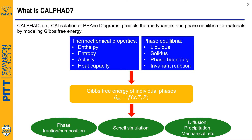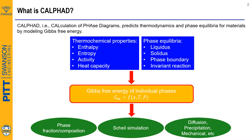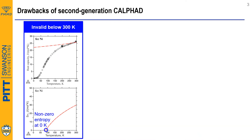The CALPHAD approach has been successfully used to design commercial steel, superalloys, aluminum alloys, and so on. The basis that controls the reliability of the CALPHAD method is a description of Gibbs free energy. So far, the widely used Gibbs free energy functions are called second generation. But why would we need the third generation CALPHAD? Because the second generation CALPHAD has some drawbacks.